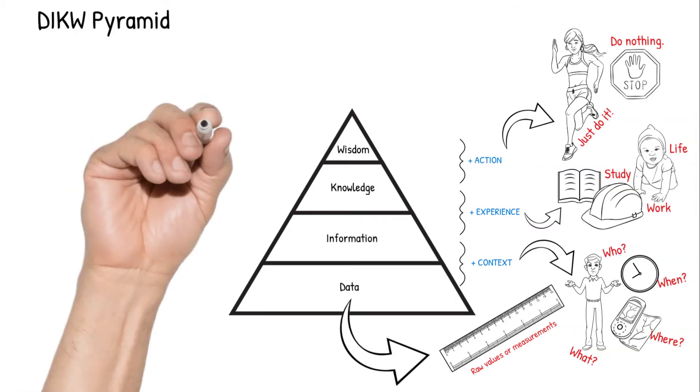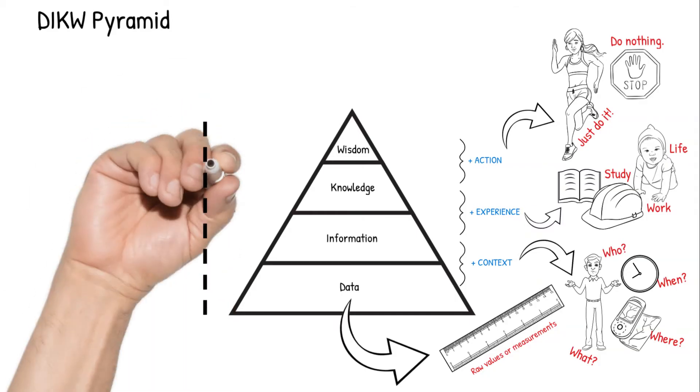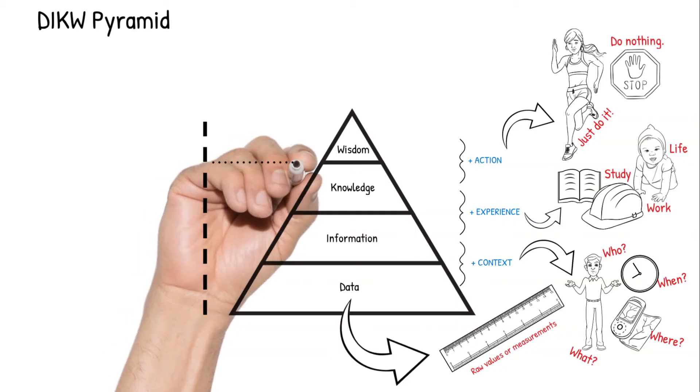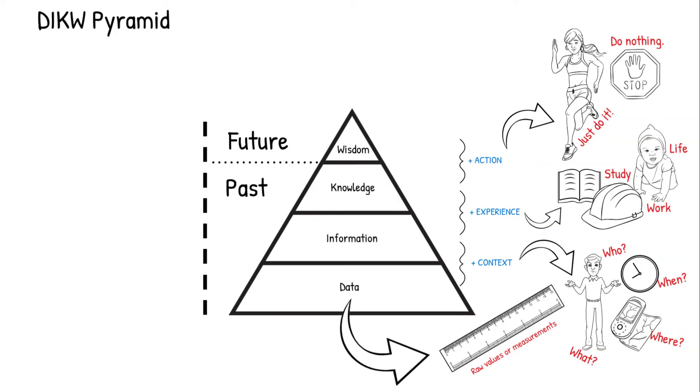When we step back and re-evaluate the entire pyramid, we notice another trend that separates the tiers. Data, information, and knowledge are all established in the past, whereas wisdom is used to establish forward action. Wisdom is future-looking while the others are backwards-looking into the past.